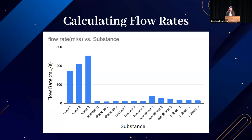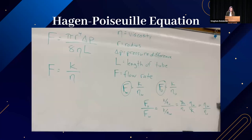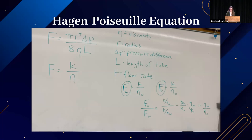I predicted water would have the highest flow rate, followed by shampoo, then oobleck and conditioner, then ketchup. Water had the highest average flow rate at 212.6 milliliters per second. Second highest was conditioner at 31.4 milliliters per second — against my hypothesis. Next was oobleck at 18.0 milliliters per second, then ketchup at 13.2 milliliters per second, and lastly shampoo at 12.9 milliliters per second. The next step was to find relative viscosity — inversely proportional to flow rate, as a consequence of the Hagen-Poiseuille equation, using water as the reference.